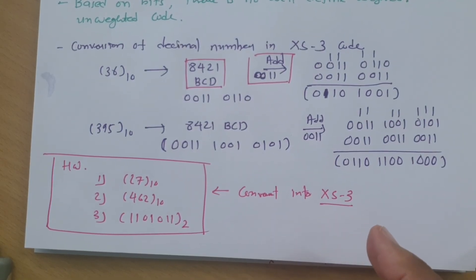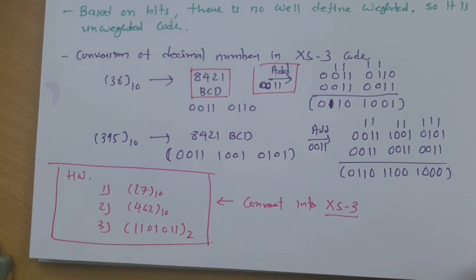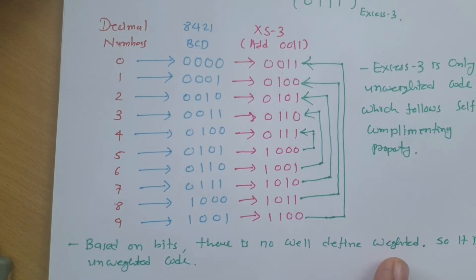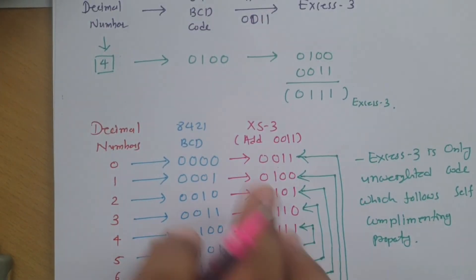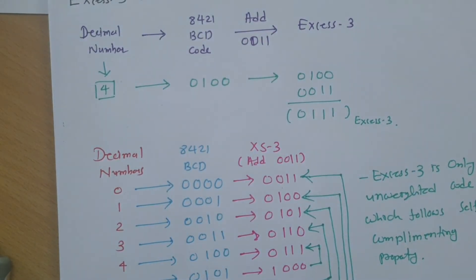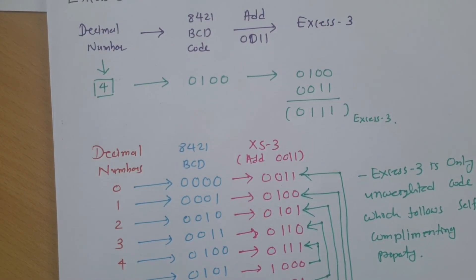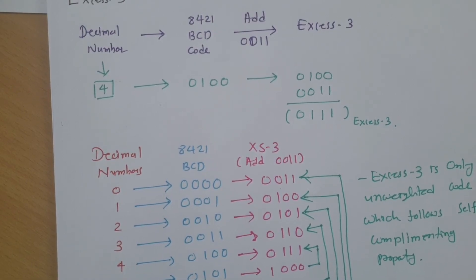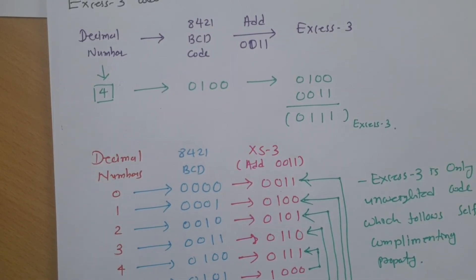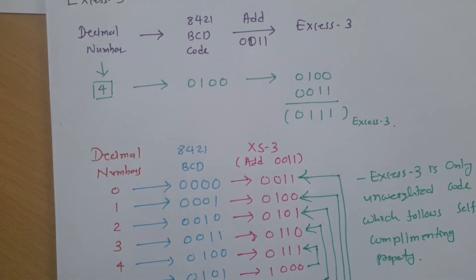To recap, the properties of Excess-3 code: it is the only unweighted code that follows the self-complementary property. The basic process is to convert the decimal number into 8421 BCD and then add 0011 to get Excess-3. In the next session, we will cover addition operations in Excess-3 code. Thank you for watching — please share your valuable suggestions.